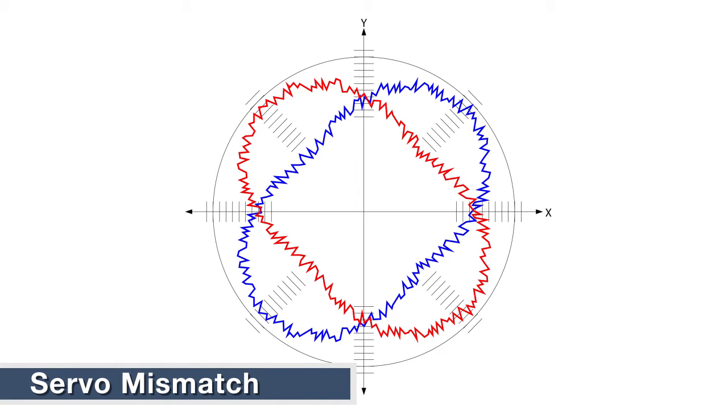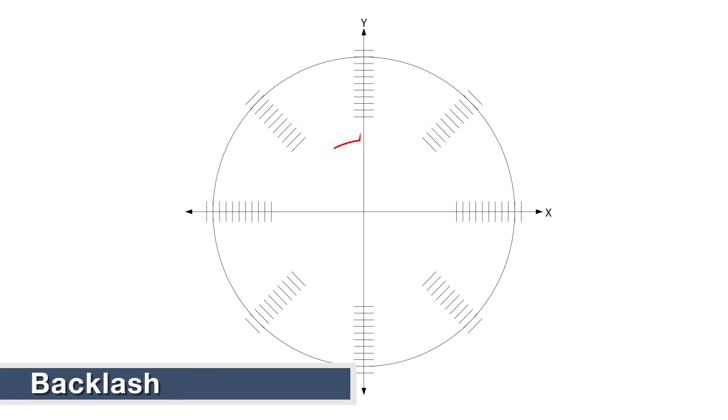Servo mismatch: when one servo lags in respect to the other. Backlash: occurs when either of the servos recoil on direction reversal. Stick slip: happens when the machine slips upon direction reversal.